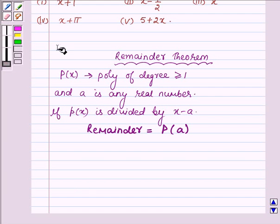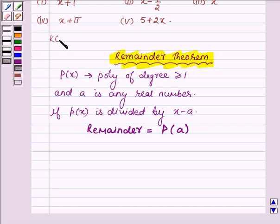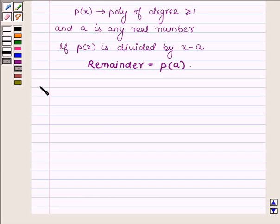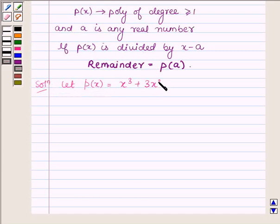This remainder theorem is the key idea which we are going to use in this problem to find the remainder of the following polynomial. Let us now begin with the solution. Let the given polynomial be p(x) which is equal to x cube plus 3x square plus 3x plus 1.